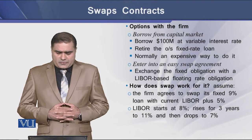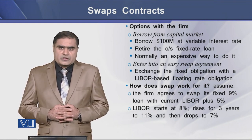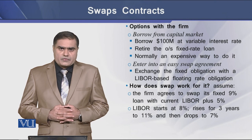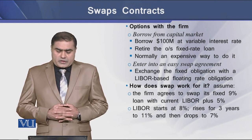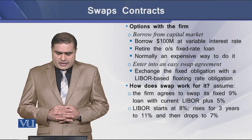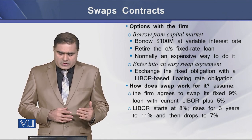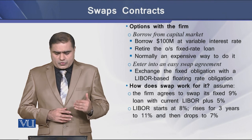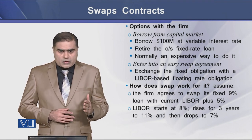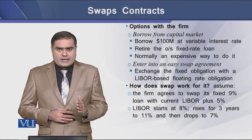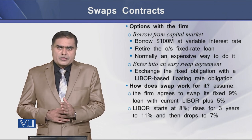Assume that the firm agrees to swap its fixed 9% loan with the current LIBOR rate of say 5%. Now if the LIBOR rate starts at 8%, rises for 3 years to 11%, then goes on declining to 7% for the rest of the maturity of the loan.